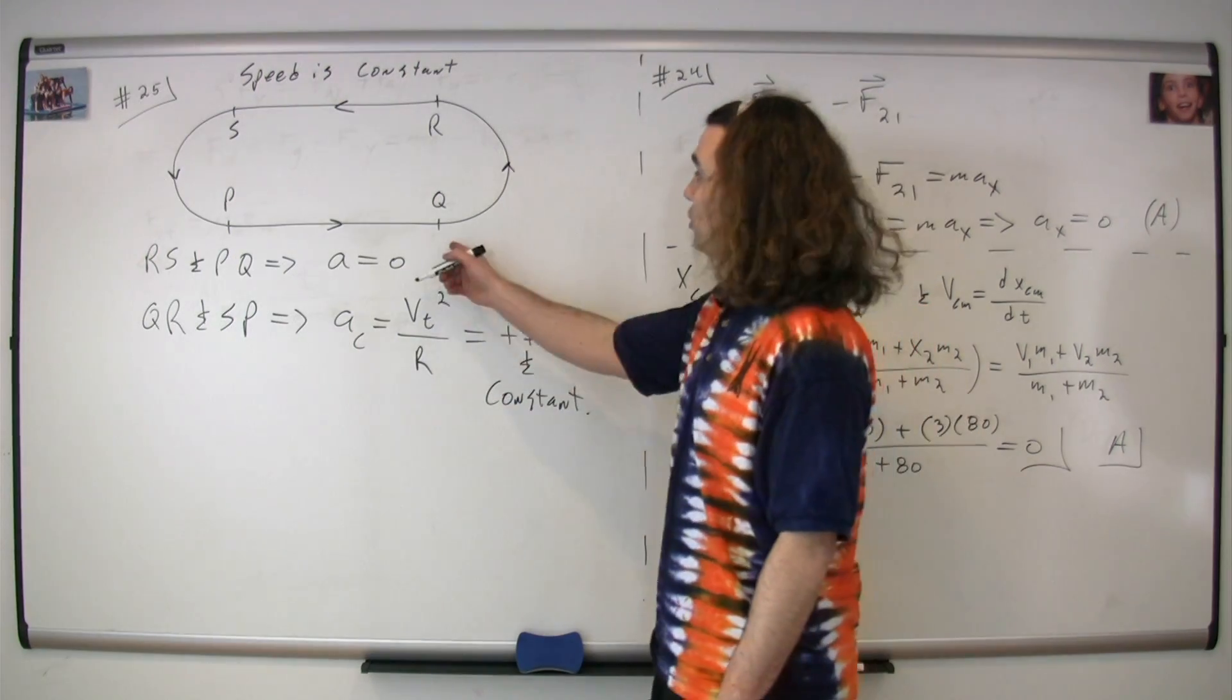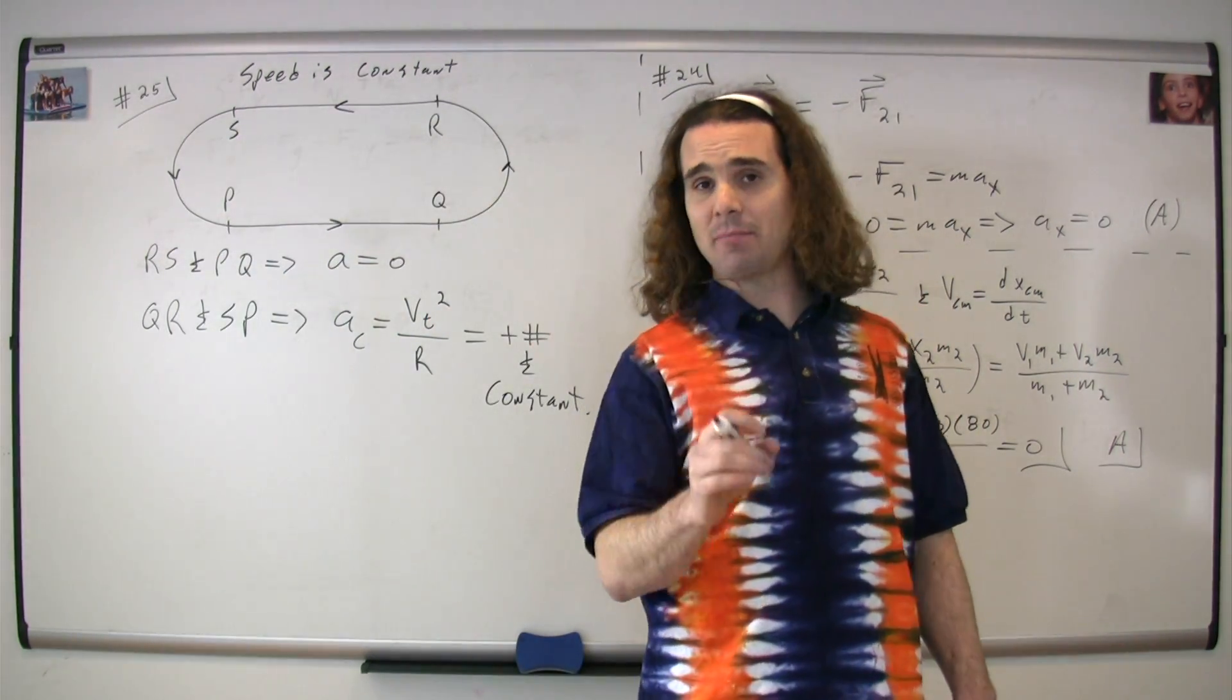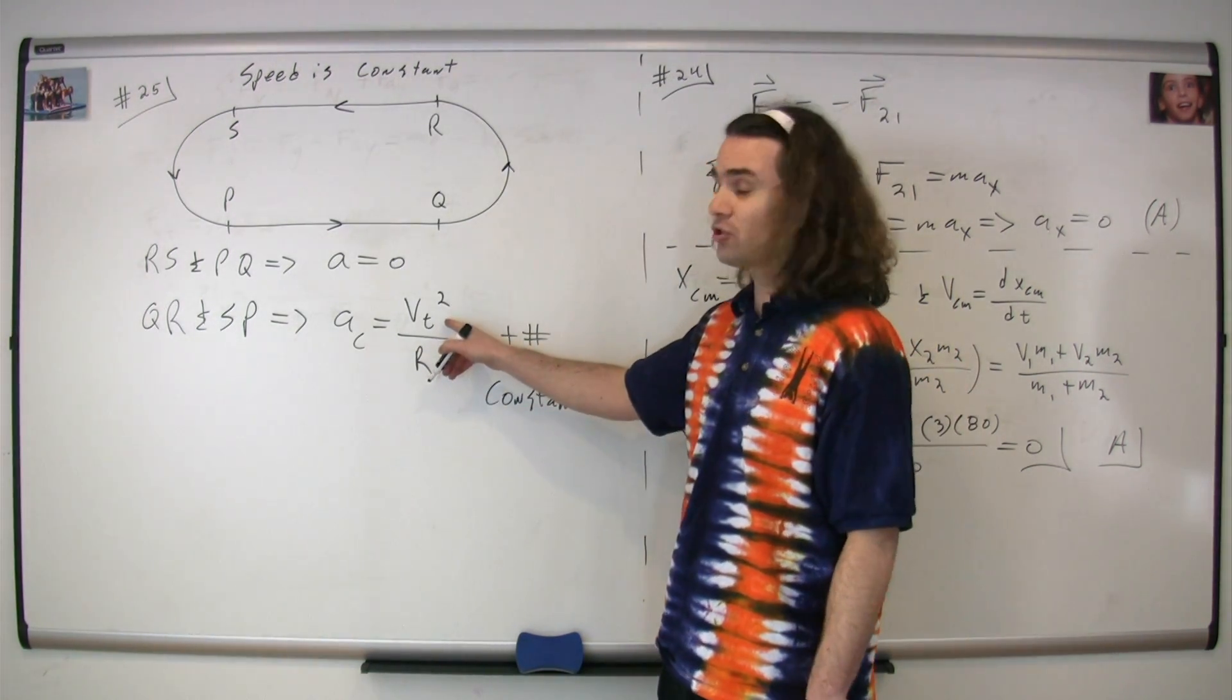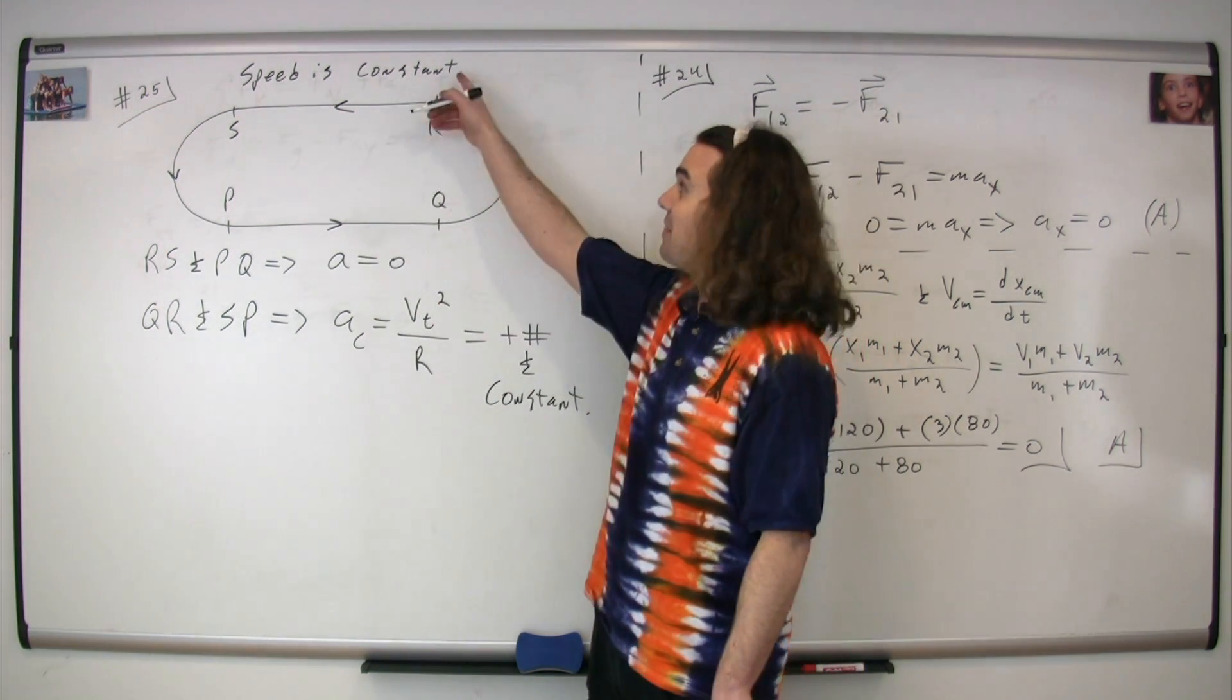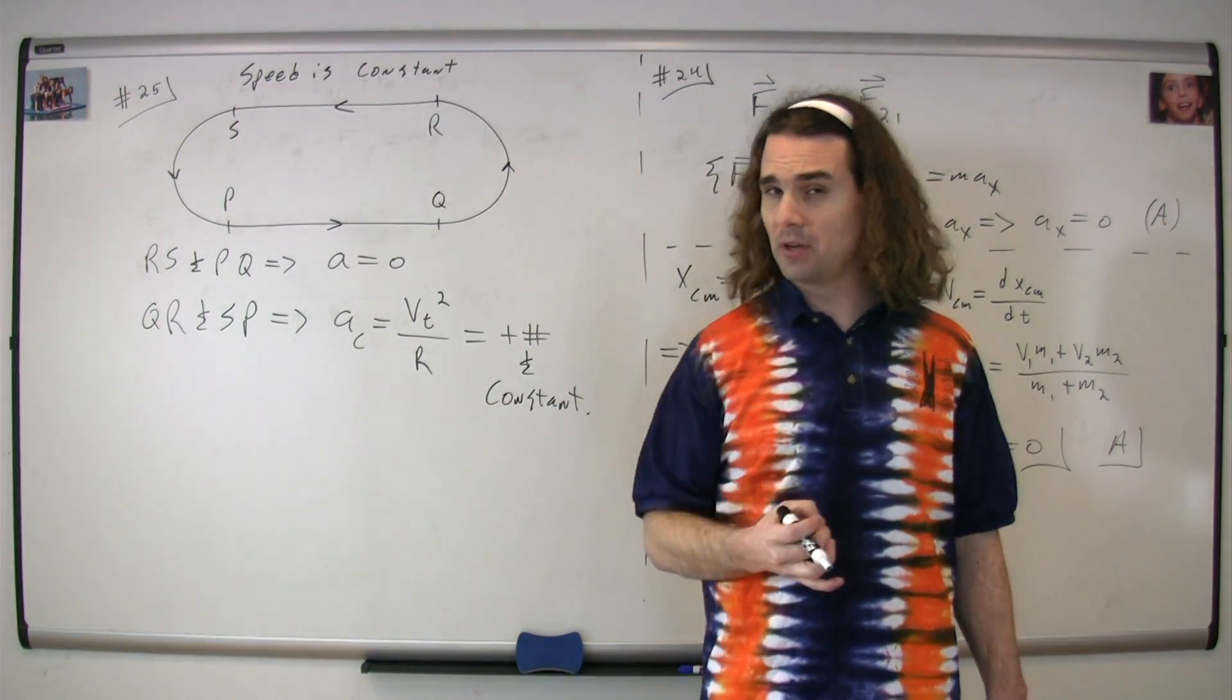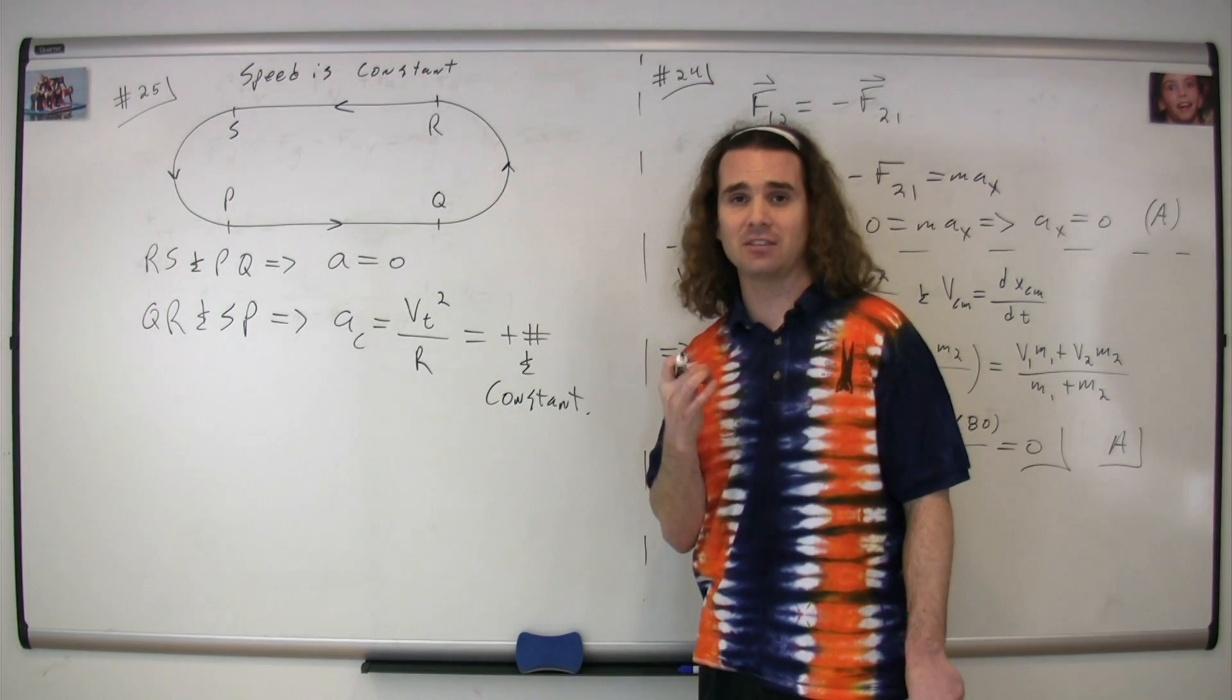Now, going from q to r and from s to p, the figure is moving along a semi-circle, which means it's going to have a centripetal acceleration that's equal to the tangential speed squared divided by the radius. That speed is constant, and the radius is constant, which means the centripetal acceleration is also going to be constant, and it's going to have a positive number.